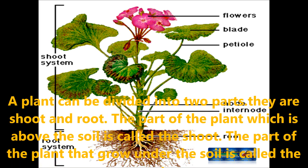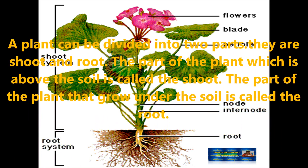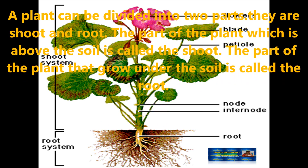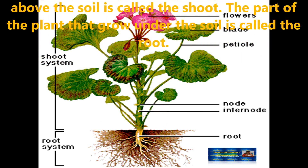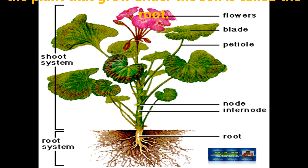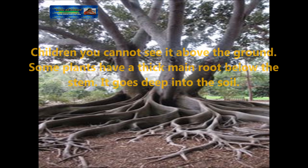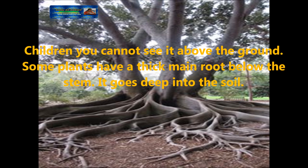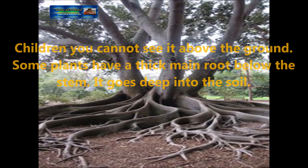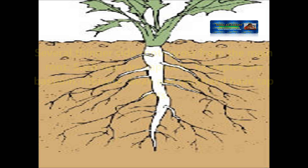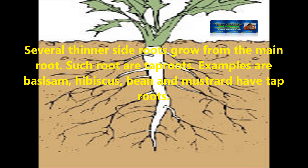A plant can be divided into two parts. They are called shoot and root. The part of the plant which is above the soil is called the shoot. The part of the plant that grows under the soil is called the root. Children, you cannot see it above the ground. Some plants have a thick main root below the stem that goes deep into the soil. Several thinner side roots grow from the main root. Such roots are called tap roots.